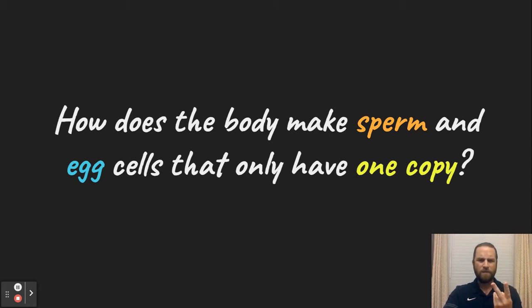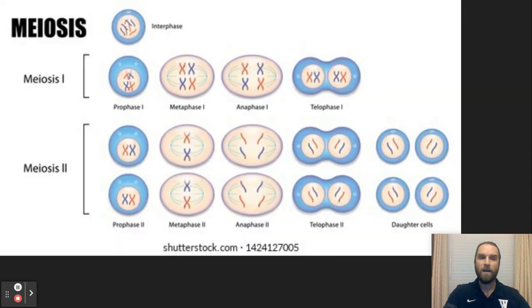If all of my cells have two copies of each, how do I get those cells that have one copy of each? Well, that happens through the process of meiosis. It sounds a lot like mitosis, so stay with me.